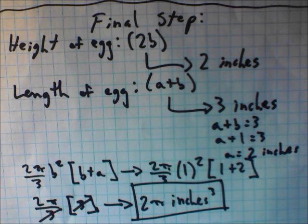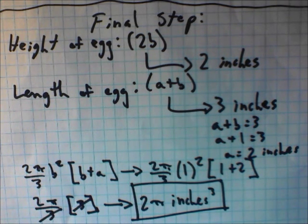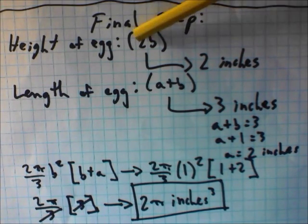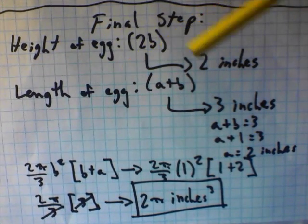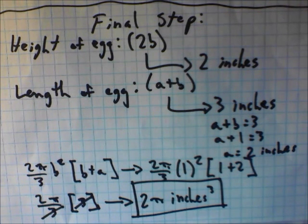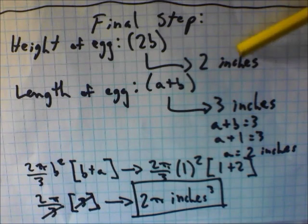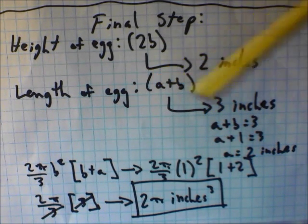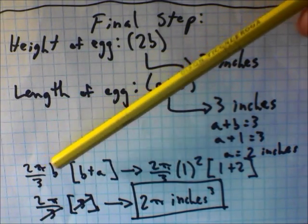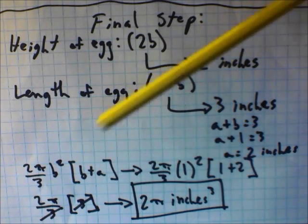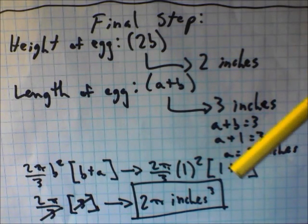For the final step, we get actual measurements from the egg. In our hypothetical example, the height of the egg — the distance from (0, b) to (0, -b), representing 2b — is 2 inches. The total length from tip to butt, from (-a, 0) to (b, 0), which is a + b, is 3 inches. Since 2b = 2, b = 1 inch, and since a + b = 3, a = 2 inches. We substitute these into our volume formula.